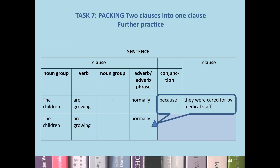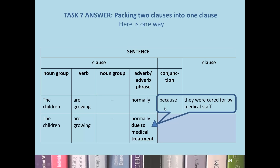We'd like you to try this with an idea about children and medicine — trying to pack the conjunction and clause 'because they were cared for by medical staff' into an adverb phrase completing the clause 'the children are growing normally.' The answer is: 'The children are growing normally due to medical treatment.' The conjunction 'because' becomes 'due to,' and 'they were cared for by medical staff' becomes 'medical treatment.' The verb 'to be cared for' becomes the noun 'treatment,' staff is lost, and the adjective 'medical' goes to modify 'treatment' instead of modifying 'staff.'